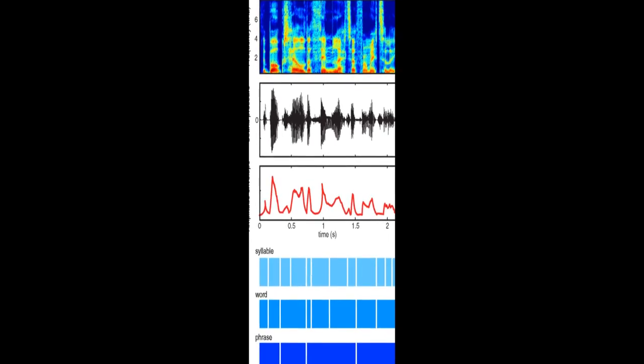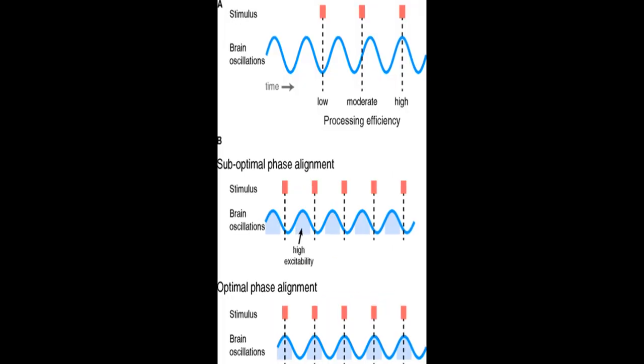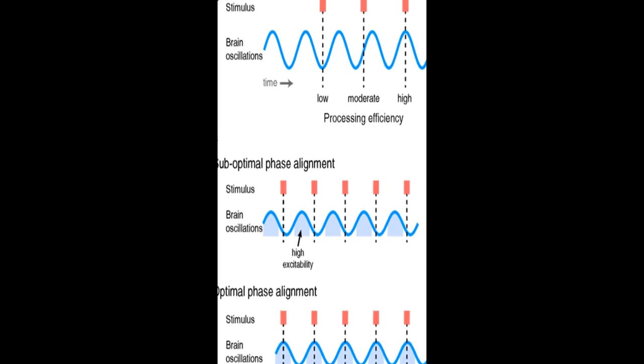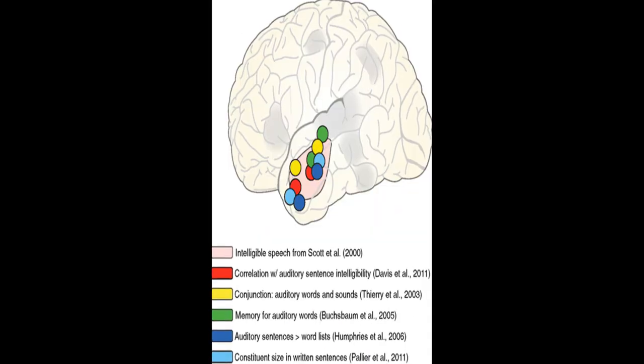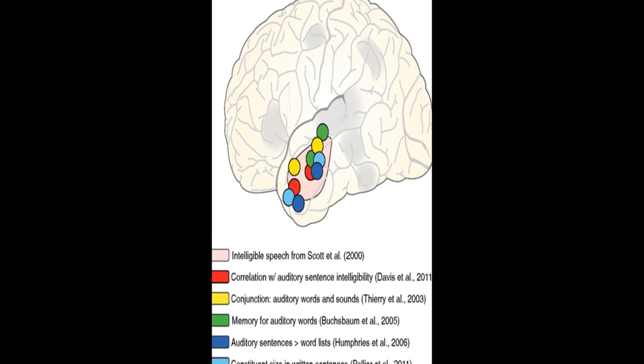Neuroimaging data shows that ongoing cortical oscillations phase lock to low-frequency information, 4 to 8 Hz, in the speech envelope, which helps increase sensitivity to relevant acoustic cues.